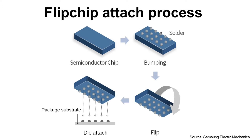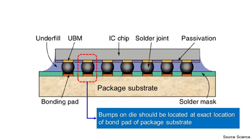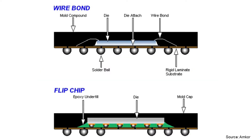There are two major differences between flip chip attach and conventional die attach. One is die placement accuracy. It is very important for flip chip die attach because the tiny bump on the die should be located at the exact location of the bond pad on the package substrate to make a good electrical connection. For conventional die attach, wire bonding can still make good electrical connection even with some misplacement. By the way, this does not work for optical sensors which require accurate optical alignment.